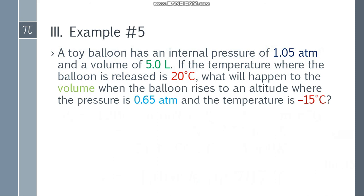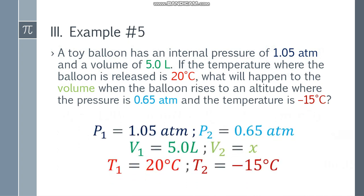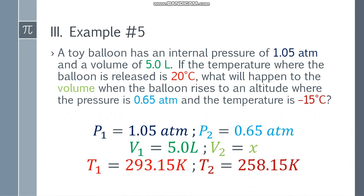Let's have the final example. A toy balloon has an internal pressure of 1.05 atm and a volume of 5.0 liters. If the temperature where the balloon is released is 20 degrees Celsius, what will happen to the volume when the balloon rises to an altitude where the pressure is 0.65 atm and the temperature is negative 15 degrees Celsius? P1 is 1.05 atm, P2 is 0.65 atm, V1 is 5.0 liters, V2 is unknown (x), T1 is 20°C and T2 is −15°C. Converting to Kelvin: T1 is 293.15 K and T2 is 258.15 K.